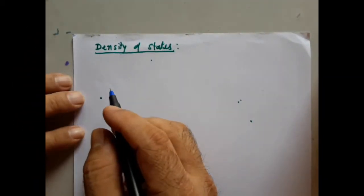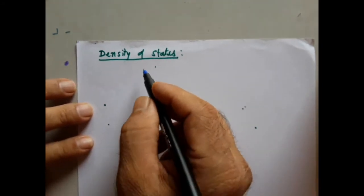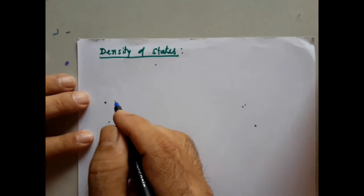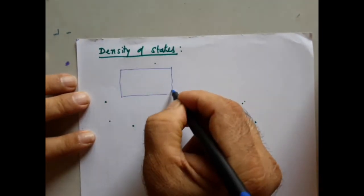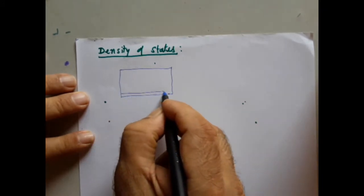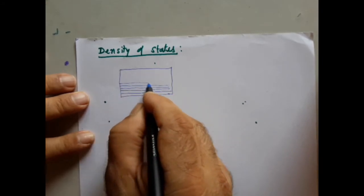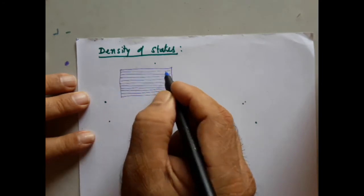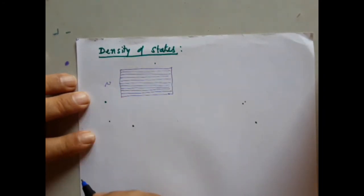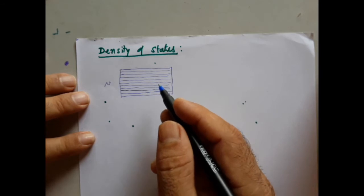We will continue with the density of states. In an energy band, there are various discrete energy levels. There are an infinite number of such energy levels corresponding to n number of atoms present. The question is whether all these energy levels are occupied or not.